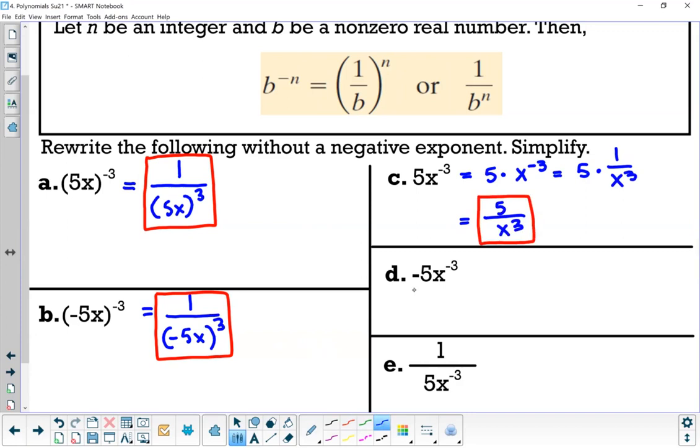All right, letter D, we have negative five x to the negative three, which again means negative five times x to the negative three. So when you take the reciprocal, you're only taking the reciprocal of x to the negative three, so we have negative five over x cubed.